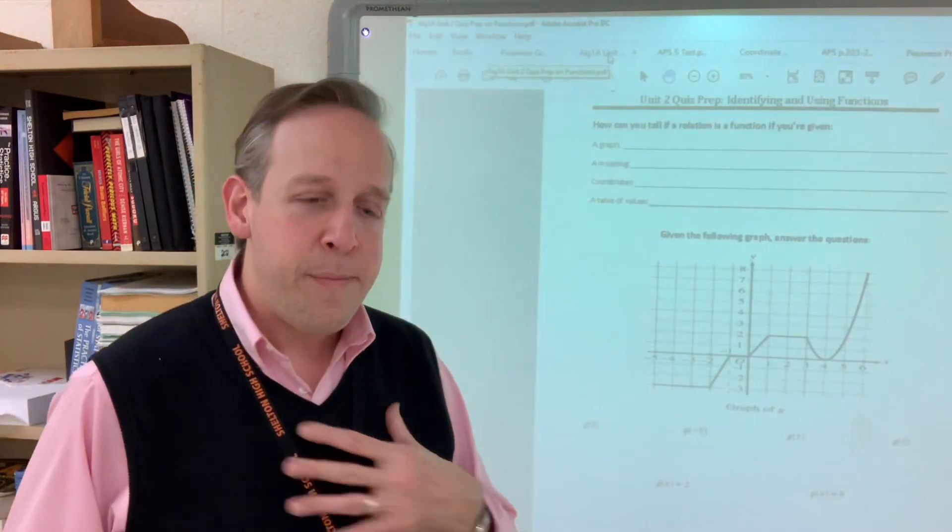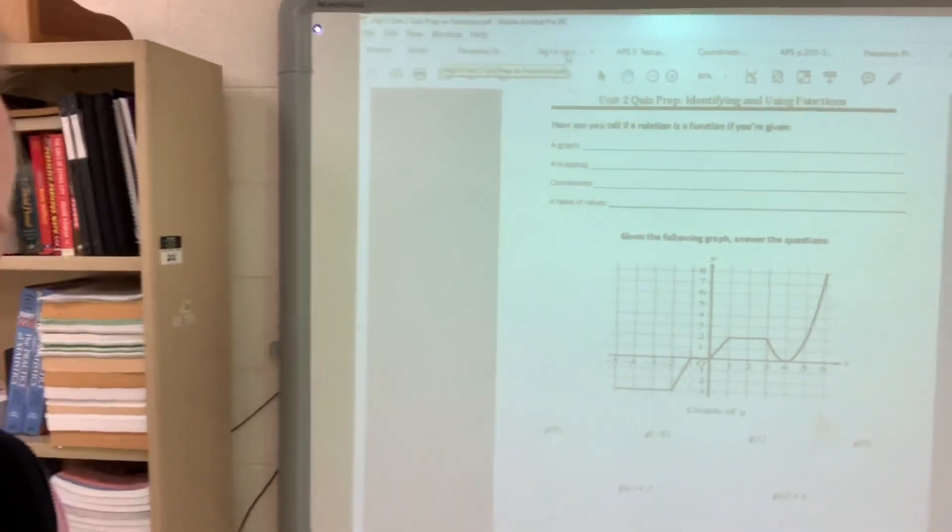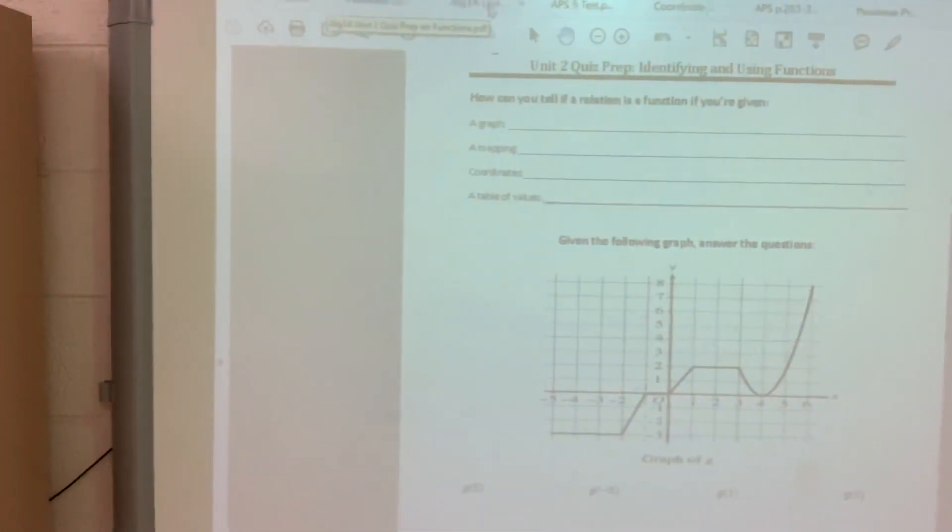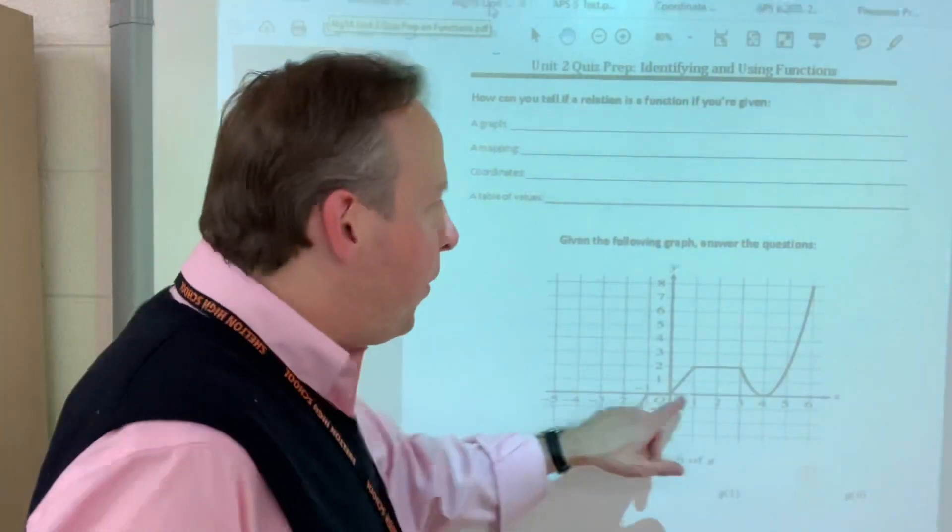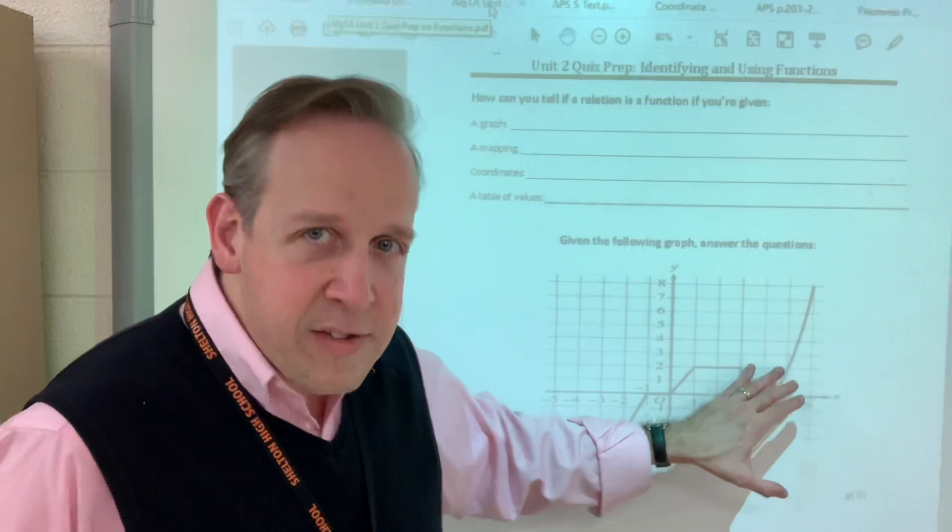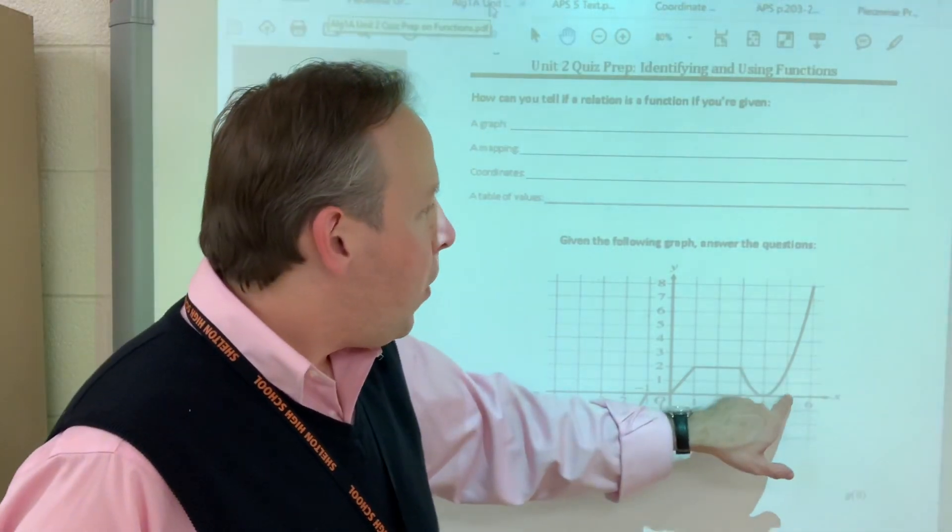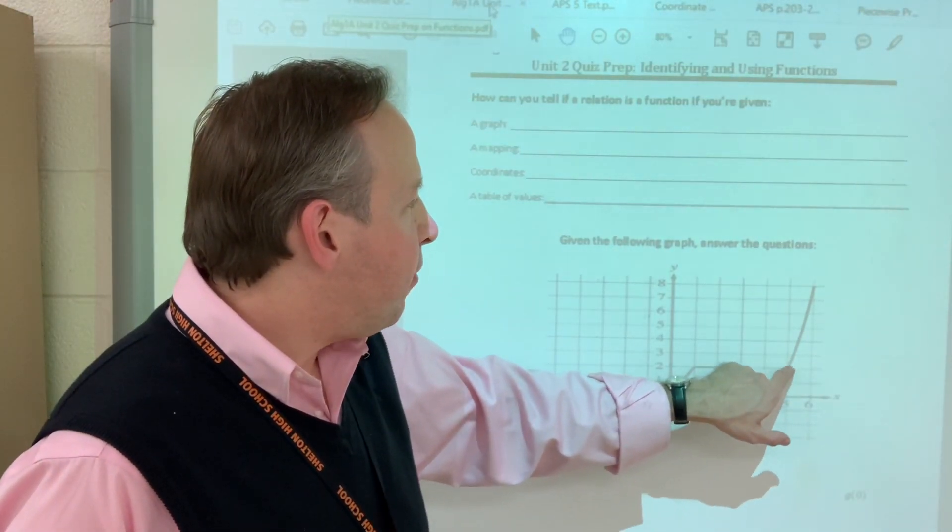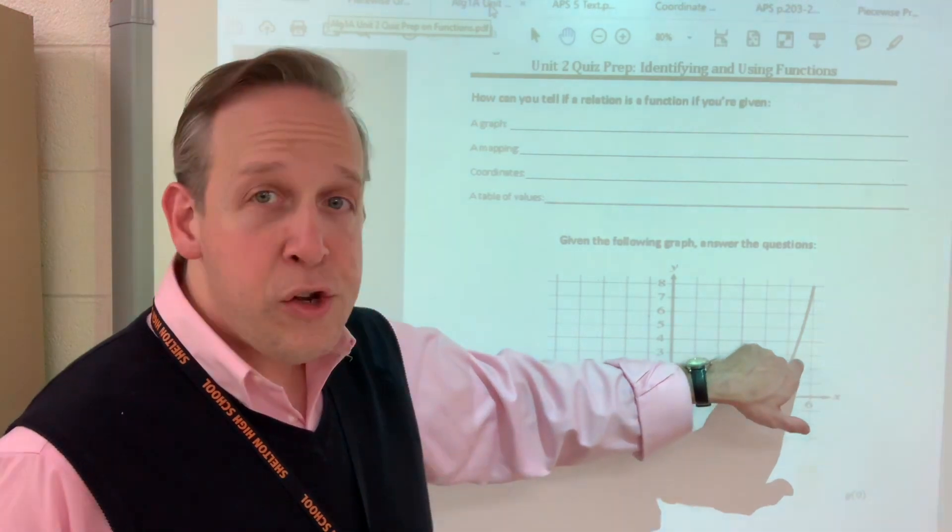So the first question is what is g of five? Here's what that means and I'll come in closer to the graph for you. g of five. That means when the input is five, when x is five, what is the output?